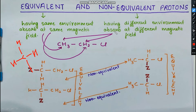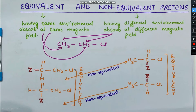To check equivalence, replace a hydrogen with another group Z. If you get the same product in every case, the protons are equivalent. Replacing one hydrogen with Z and then another with Z gives the same product, confirming those protons are equivalent. However, if comparing protons from different positions gives different products, those protons are non-equivalent.